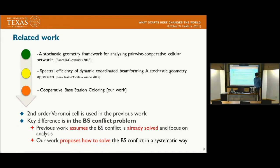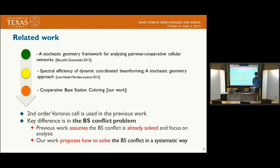There were several prior works that used the second-order Voronoi region. The key difference from our work is that the previous work assumes that the base station conflict is already solved, and they focused on analysis using tools from stochastic geometry. In our work, we propose how to solve the base station conflict problem in a systematic way by leveraging the geometrical property of the Delaunay triangulation.